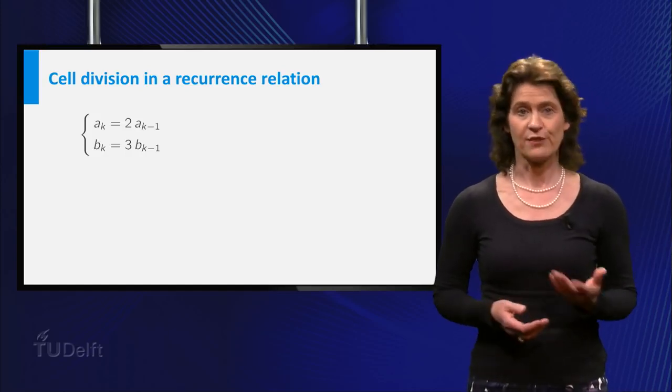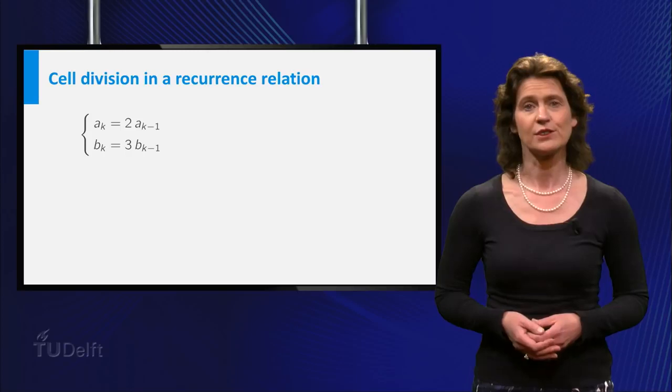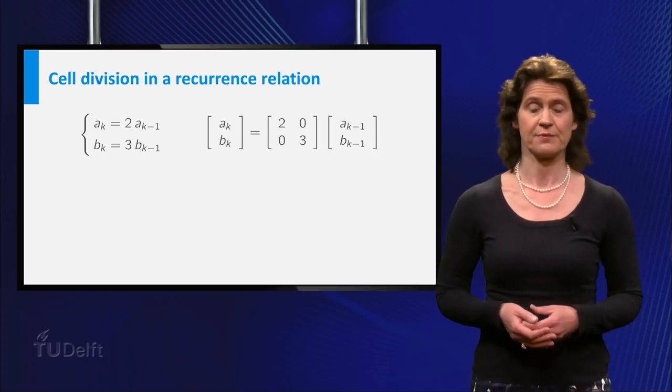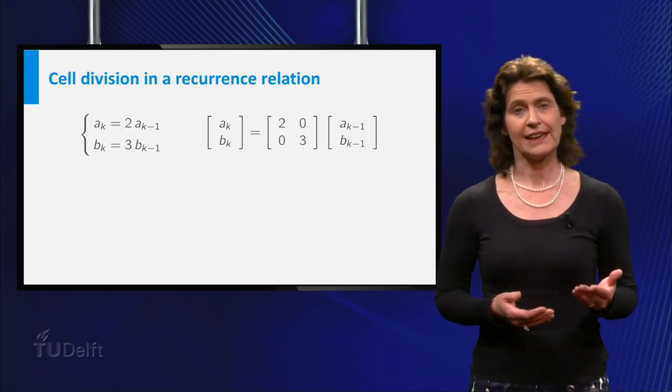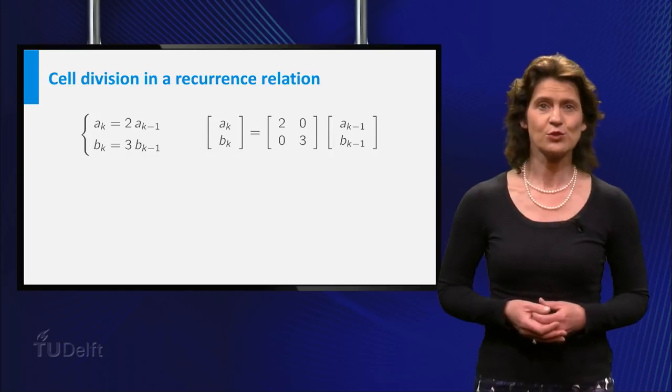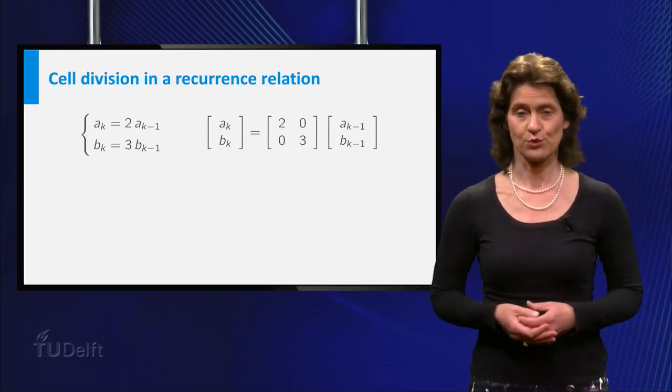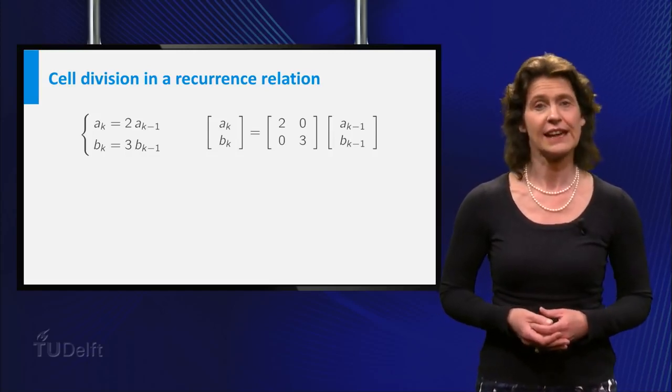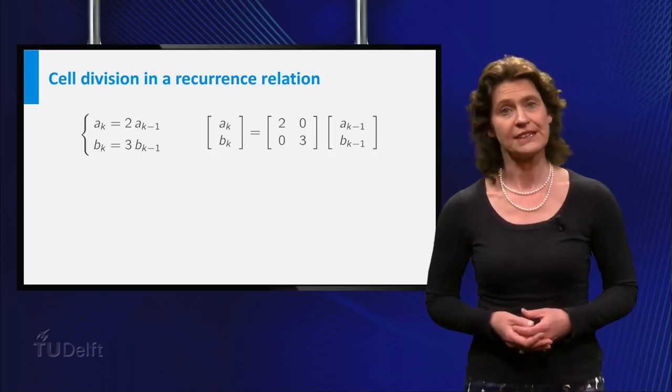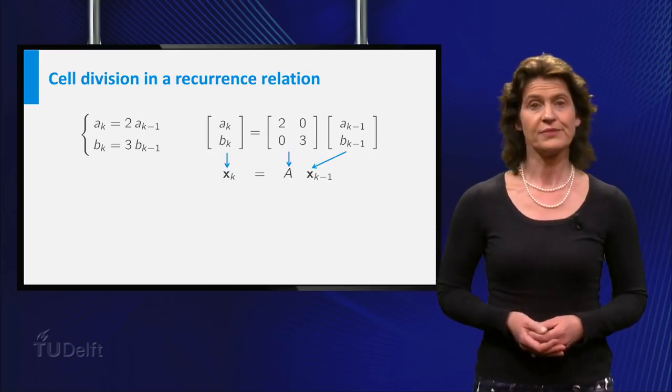Using a matrix and vectors you can rewrite the recurrence relation like this. The vector (ak, bk) is equal to the matrix (2, 0; 0, 3) times the vector (ak-1, bk-1), or even shorter...